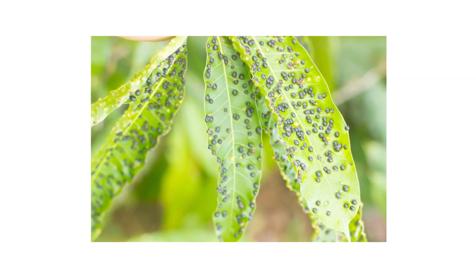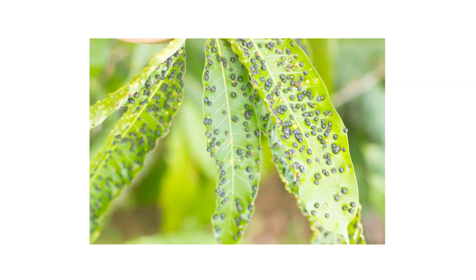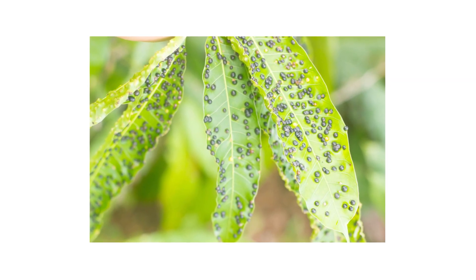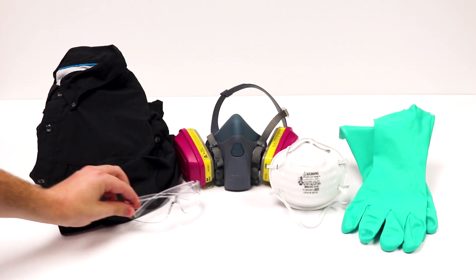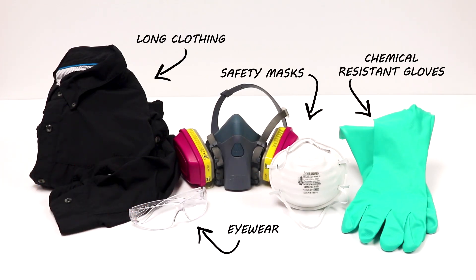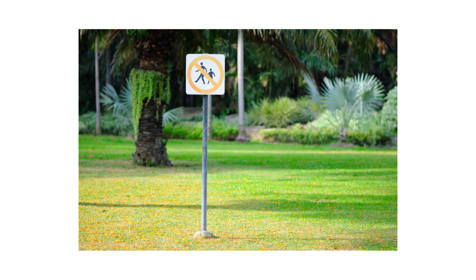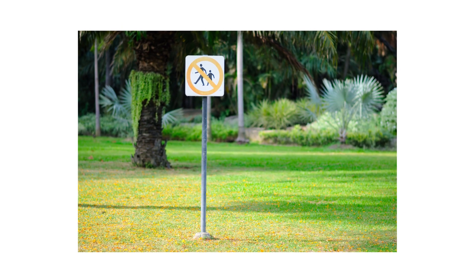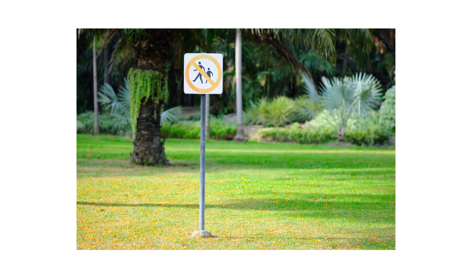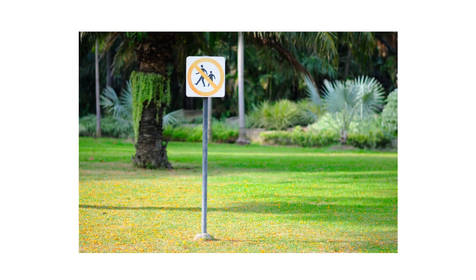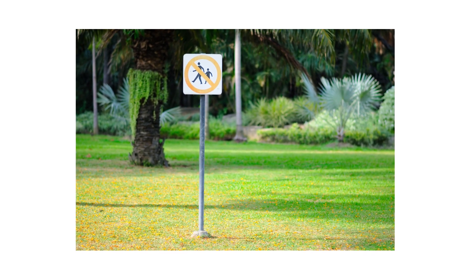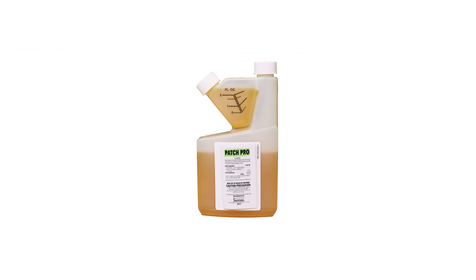After identifying your pest and inspecting for activity on your property, it's time to start treatment. Before starting any treatment, be sure to wear your personal protective equipment, or PPE, and remember to keep all people and pets off the treated areas until dry. To get rid of anthracnose, you'll need to use a fungicide like Patch Pro.